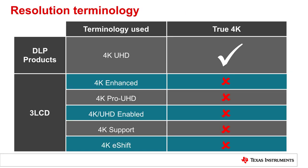In this table, 4K resolution terminology used by both DLP technology and 3LCD is shown. As you can see, only DLP technology delivers true 4K resolution. While 3LCD provides several names for 4K resolution, none of them deliver true 4K resolution. All of these 3LCD products deliver only 4 million pixels onto the screen.